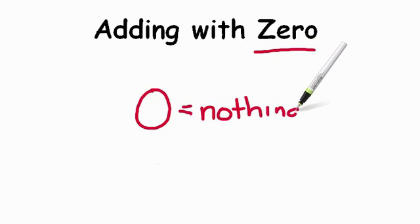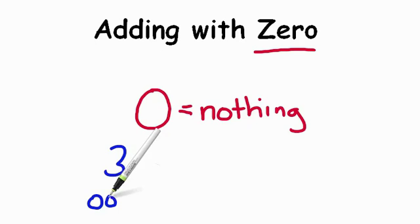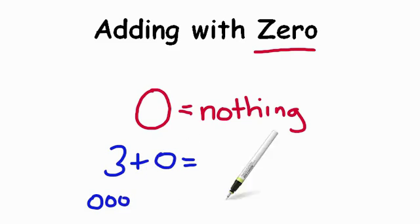So this makes working with zero a lot of fun. For instance, let's take the number three. We know that's worth the same as an amount of three here. So if three, and we add zero to it, if we add nothing to this number, we still have the number we started with.